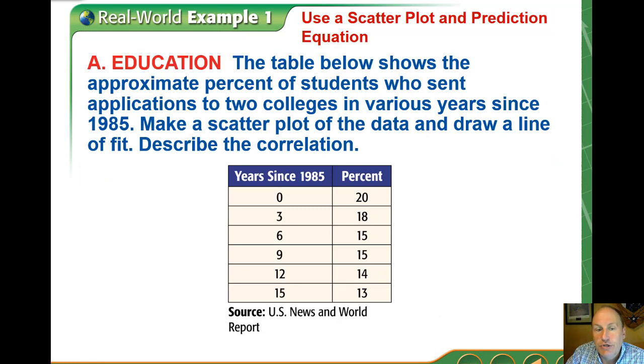This is a table that shows the approximate percentage of students who sent applications to two colleges, not just one but two, in the years since 1985. We're going to make a scatter plot, we're going to draw a line of fit, and we're going to look at the correlation.